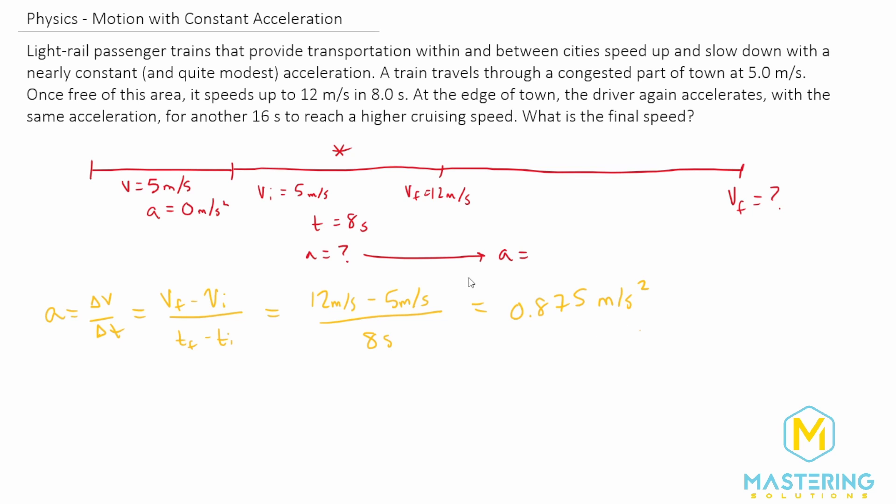So now that we have the acceleration, we can plug that in. We have all the information we need to find the final velocity. To do that, we'll be using a kinematic equation. The one that we have is V final equals V initial plus acceleration times time.